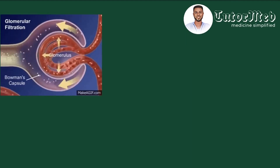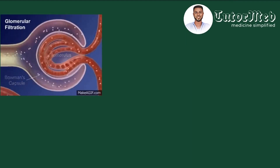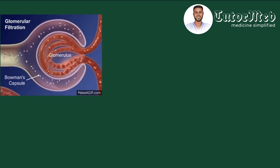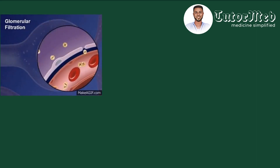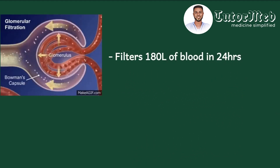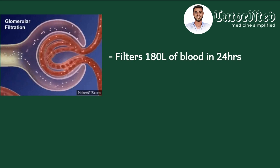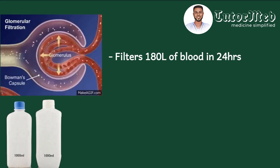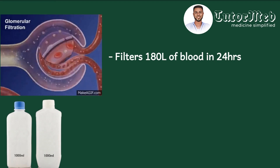The glomerulus is a unique capillary system which permits large volumes of blood to be filtered along with small molecules like sodium and potassium, but not large molecules and negatively charged molecules like albumin and blood cells. In 24 hours, the glomerular system is able to filter about 180 liters of blood. To give an idea of that, picture 180 one-liter bottles — the glomeruli in 24 hours are able to filter 180 times that volume.